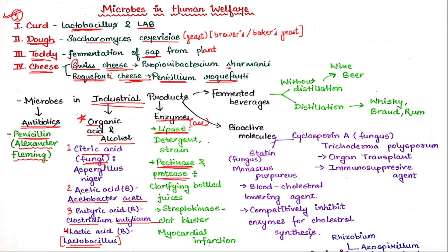Then we have Pectinase and Proteases, which we use in juice processing. There are two types of juice: one you take from a fresh juice shop with pulp present, called mother pulp. In packaged juices like Tropicana or Maaza, this pulp is removed using enzymes. The process is called clarification — the pulp is removed using Pectinase and Proteases.